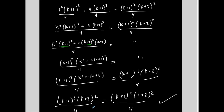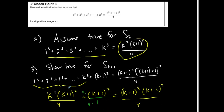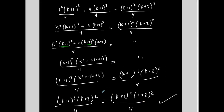This is the fun part. The hardest part of mathematical induction is remembering to replace the sum of the first k terms in step 3 with the formula from step 2. But once you do that, it's all algebra. You're going to have cool algebra tricks pop up — there are two tricks involved: the substitution, and then some factoring or algebraic manipulation to get the expression into the form you want.